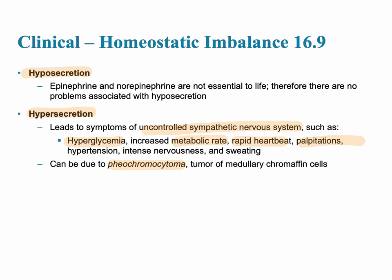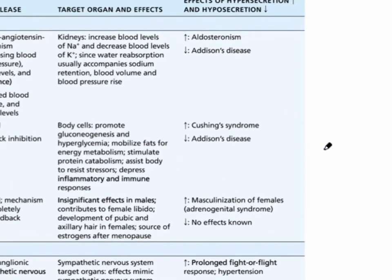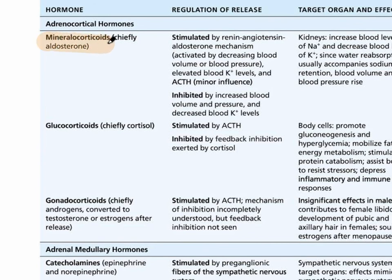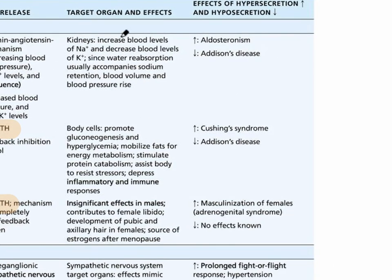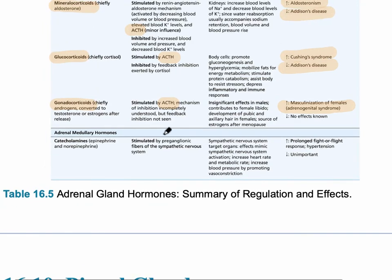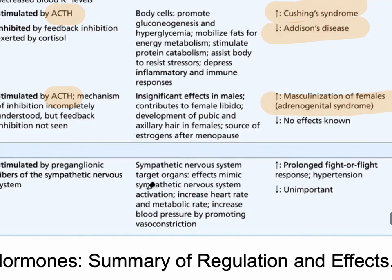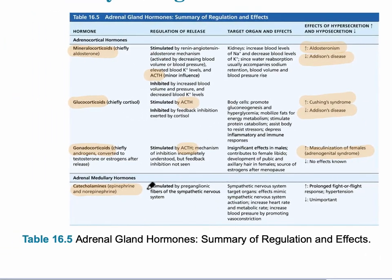The next slide summarizes the adrenal gland hormones and their effects. The first three rows show the adrenocortical hormones secreted from the three cortex layers, all stimulated by ACTH via the classic hormonal stimulus. Too much mineralocorticoid leads to aldosteronism; too little causes Addison's disease. Too much glucocorticoid causes Cushing's syndrome; too little also causes Addison's disease. Excess gonadocorticoids can lead to androgenital syndrome. Finally, the adrenal medulla releases catecholamines, which can cause a prolonged fight-or-flight effect and hypertension.